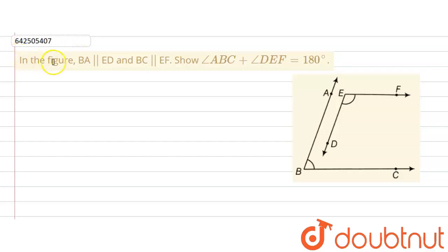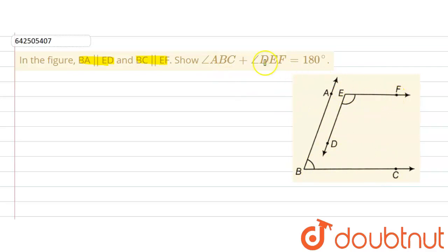The given question says that in the figure BA is parallel to ED, and BC is parallel to EF. We are required to show that angle ABC plus angle DEF is equal to 180 degrees.